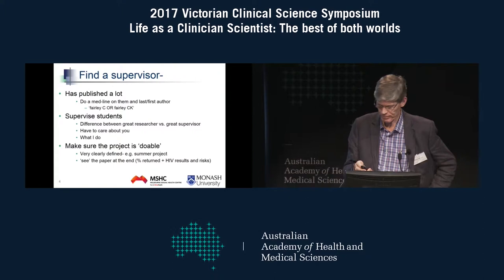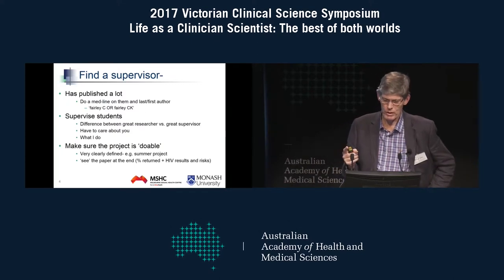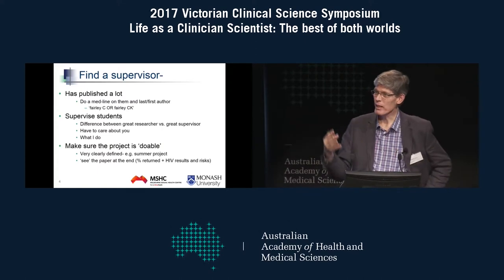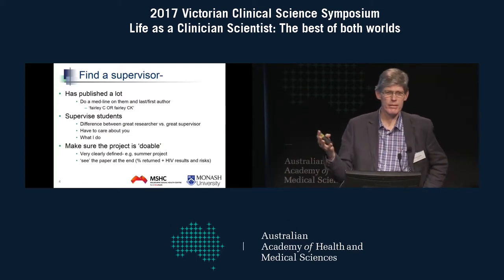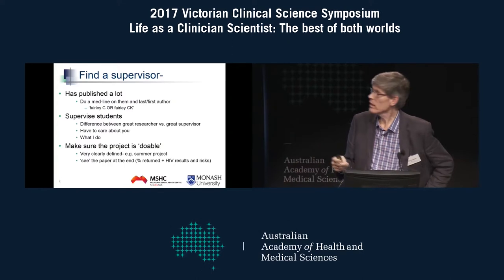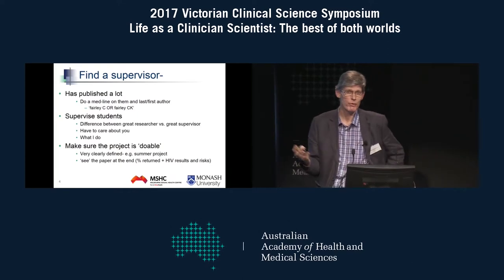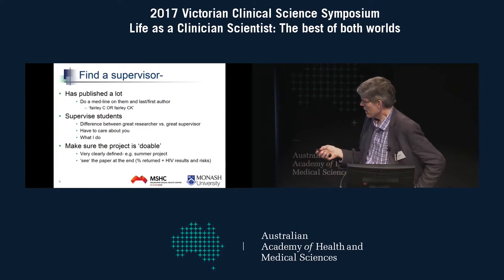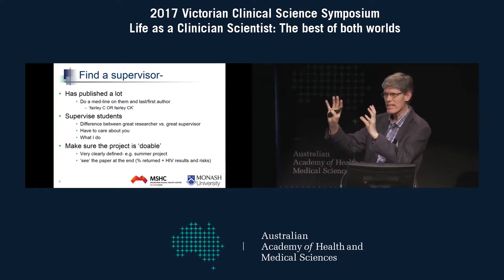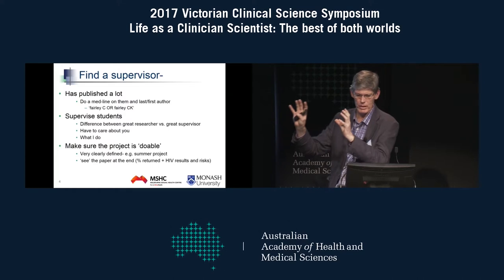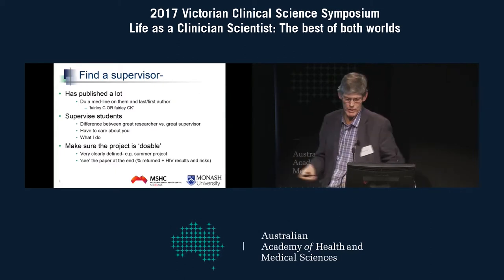This is how you find a supervisor — similarly to what Rinaldo mentioned. They've got to have published a lot. If you want to write a paper, find someone who's published many papers — do a Medline search and see how many they've published. I'd be a bit anxious about someone who published less than 50. They've also got to be a good supervisor. There's a big difference between a good researcher and a good supervisor — they've actually got to care about you and your career.